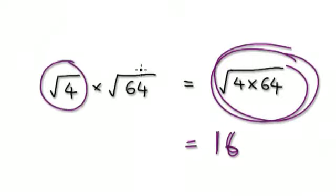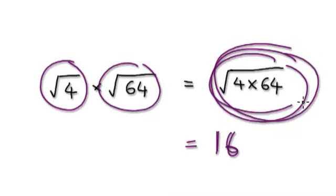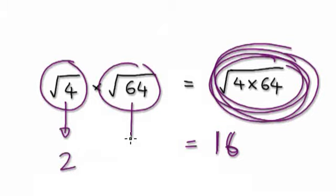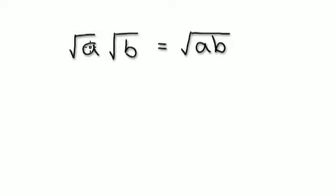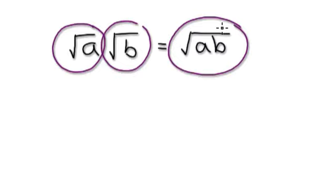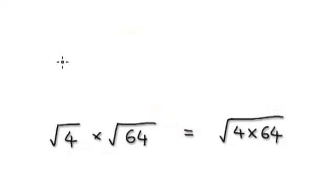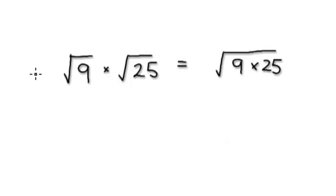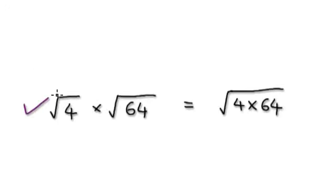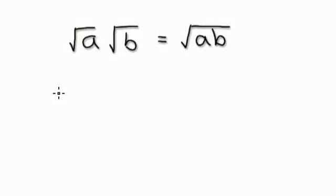We're asking: is this times this equal to this? Square root of 4 is 2, square root of 64 is 8, so in this case it's also true. So in general, can we say this times this is the same as this? You could probably guess, but how can you be sure? We've seen it's true in this case and true in this case. But how do we know it will always be true?